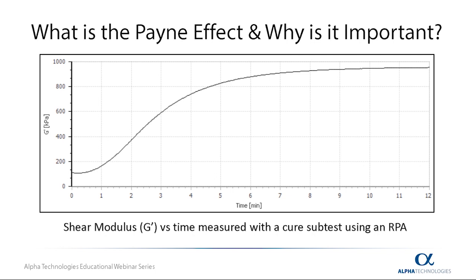Knowing how to measure and understand modulus is very important because of the effect it has on processing and performance of a rubber compound. The ability to measure the interactions between the filler-filler and filler-polymer helps us assure that the rubber compound has been processed adequately. This ability includes the measurement of filler dispersion through the polymeric matrix as well as the measurement of any in-situ reaction in the internal mixer. Without a good mix, properties of cured compounds are typically inferior and may even fail to meet product specifications. This is the main reason we want to have a reliable and repeatable way to test and measure dispersion and modulus.